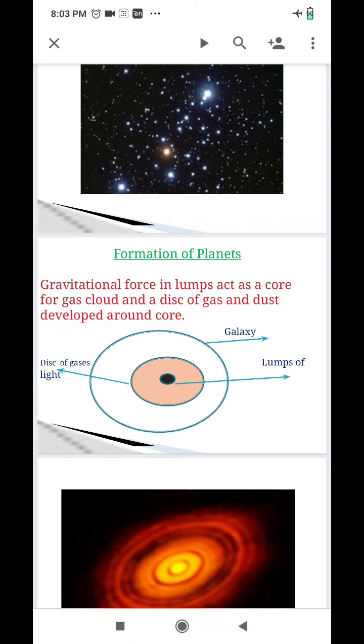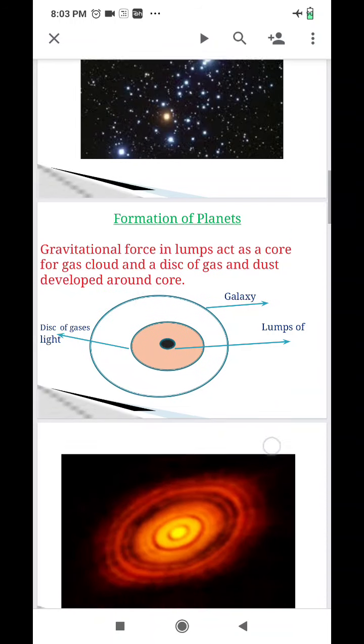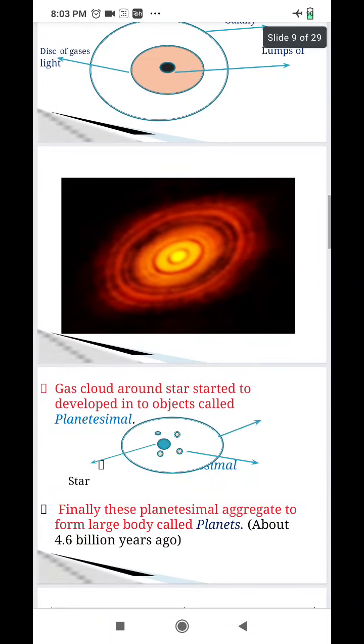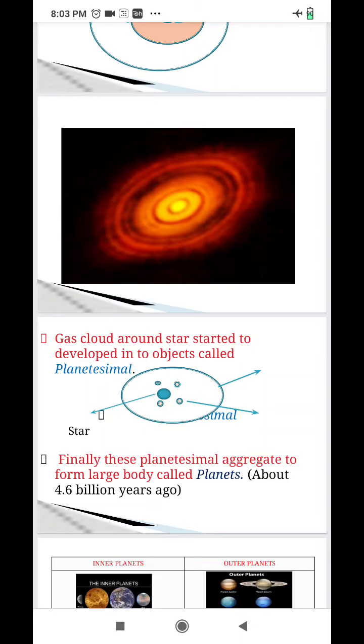And in the last stage, the large number of small planetesimals aggregated to form few large bodies and we can see them today in the form of planets. We can see gas cloud, then we can see planetesimals, small objects, finally they are coming together and leading to the formation of planets.